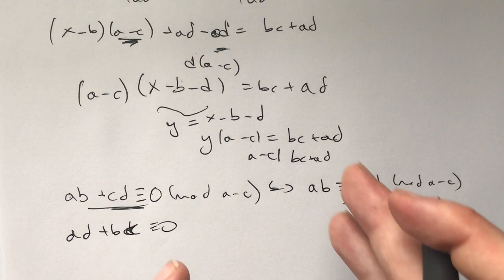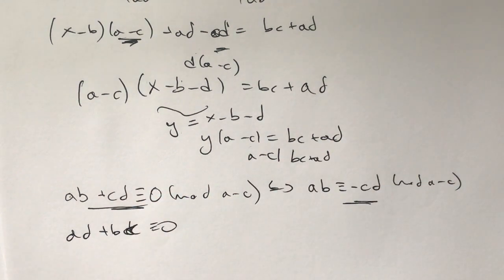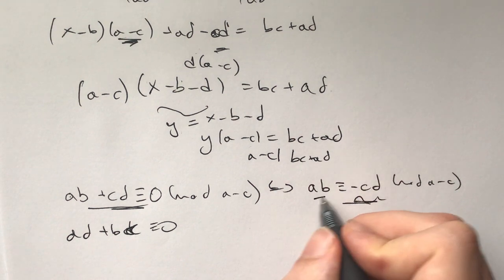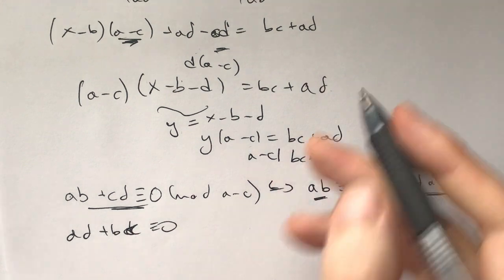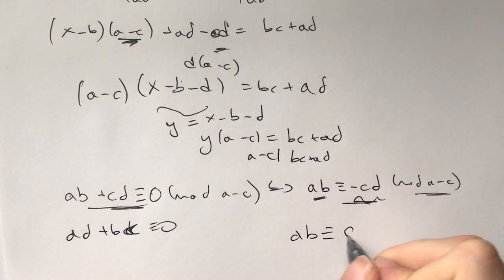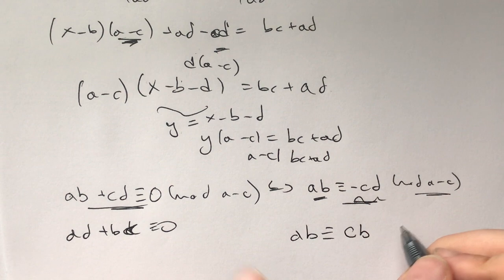Now I invite you to pause for two to five minutes and see if there's anything you can do with this. The question is how can I change this into something else? What is ab also congruent to modulo (a-c)? Well, ab is congruent to cb modulo (a-c).